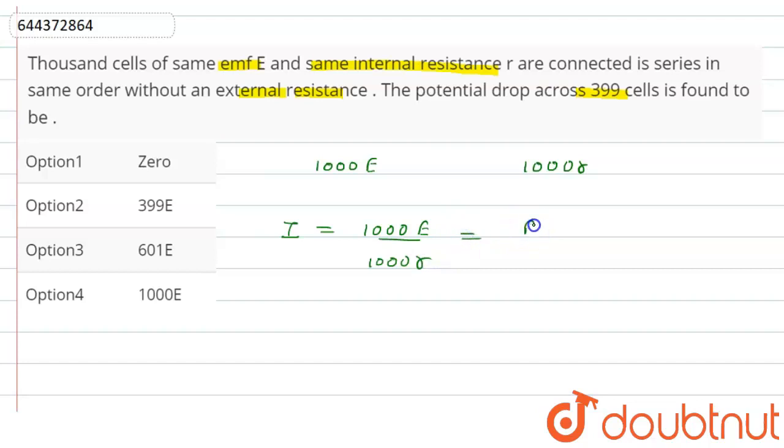Now the potential drop across first cell will be equal to E minus Ir.